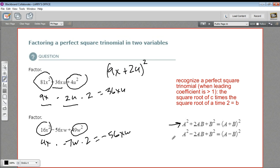This time it's got a negative sign in the middle, so we'll use this pattern right here, where we have the square root of this first term, 4x, minus the square root of the second term, 7w, quantity squared. So that's how to factor a perfect square trinomial in two variables.